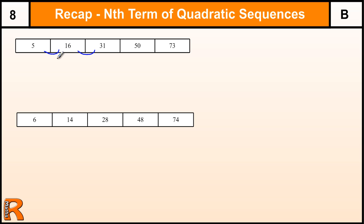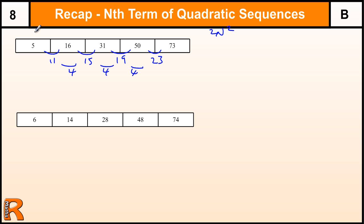This one goes up by 11, then 15, then 19, then 23 — going up by 4 each time. Now in a simple n squared quadratic sequence it goes up by 2 each time. But this is 4, which tells us that this sequence is based on 2n squared, because it's twice as much. So 2n squared: 2, 8, 18, 32, 50.